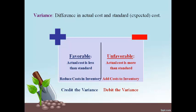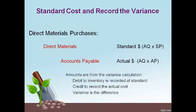A favorable variance is recorded with a credit, and an unfavorable variance is recorded with a debit. Direct materials purchased is recorded with the same debit to direct materials and credit to accounts payable. The inventory account always changes by the standard or estimated amount, and the credit is always an actual amount. The variance is recorded for the difference — unfavorable variances with a debit and favorable variances with a credit. AQ times SP is the standard estimated amount, and AQ times AP is the actual amount.